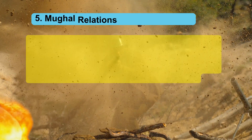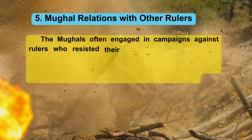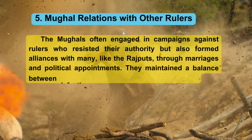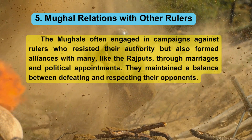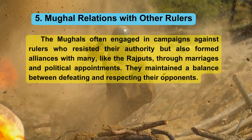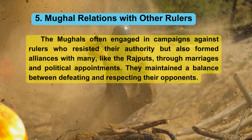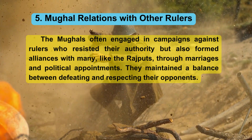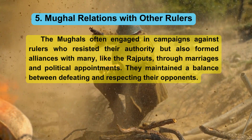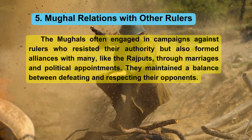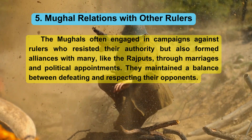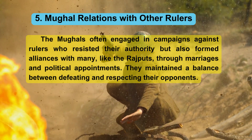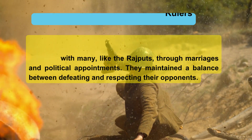5. Mughal Relations with Other Rulers. The Mughals often engaged in campaigns against rulers who resisted their authority, but also formed alliances with many, like the Rajputs. Through marriages and political appointments, they maintained a balance between defeating and respecting their opponents.